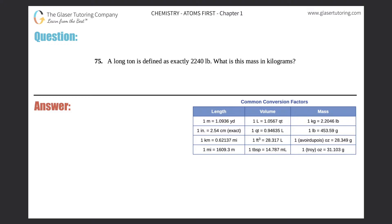Number 75. A long ton is defined as exactly 2,240 pounds. What is this mass in kilograms?